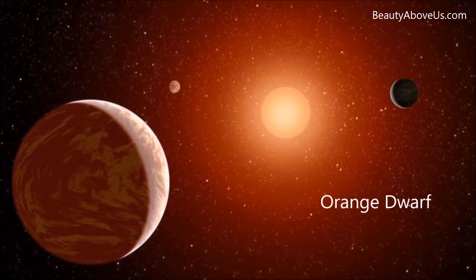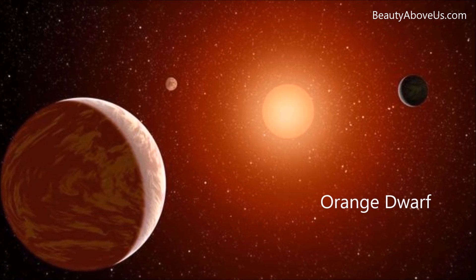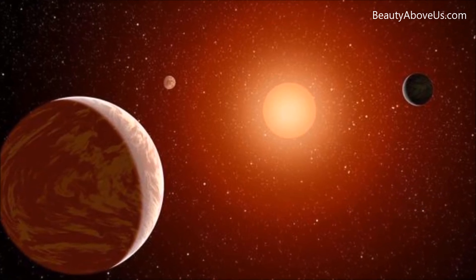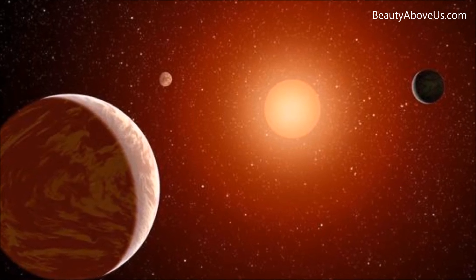Orange Dwarf. These smaller and cooler dwarf stars are similar to their yellow counterparts, but they live longer than yellow dwarfs. Some of the examples of orange dwarf stars are Alpha Centauri B and Epsilon Eridani.